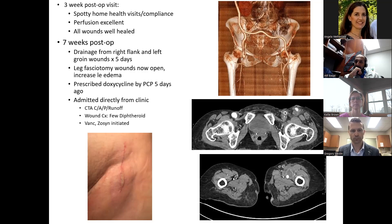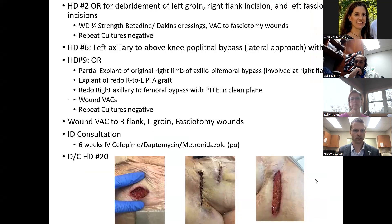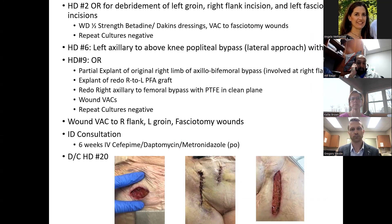CT imaging showed air and fluid around the left limb of the graft coming down to the femoral artery, and an obvious enhancing abscess more distally. We took her to the OR for sepsis control — opened all infected wounds, used half-strength betadine and Dakin's dressing, cleaned everything up, and VAC'd her lower extremity fasciotomy wounds. A few days later we performed extra-anatomic revascularization with a left axillary to above-knee popliteal bypass via lateral approach, followed by explant of the infected portion of her axillobifemoral graft including both limbs.